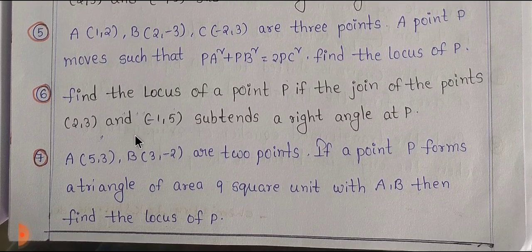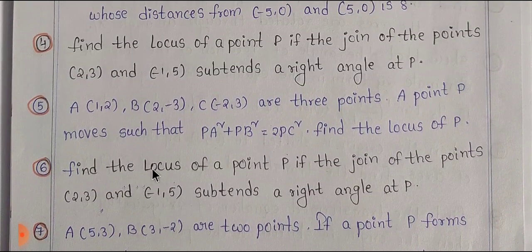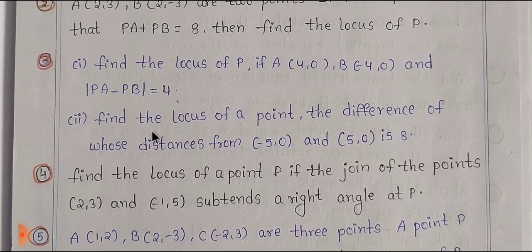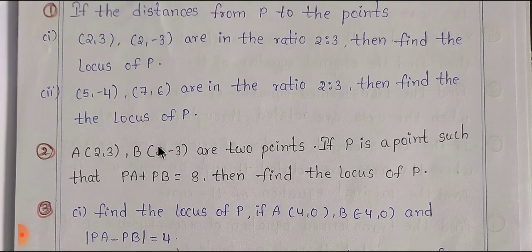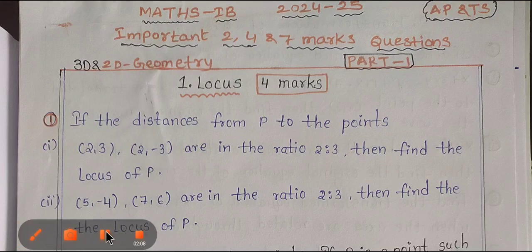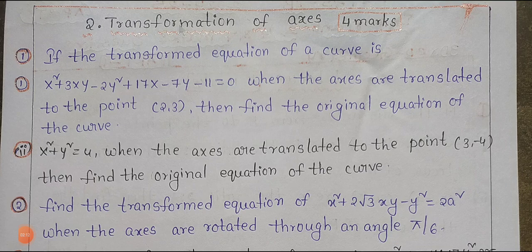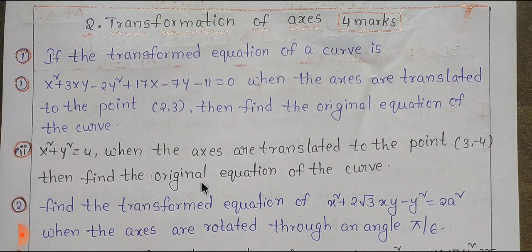Sixth one, seventh one — you want to note seven problems. Next page: transformation of axes, which carries 4 marks. You want to make clarity on this.